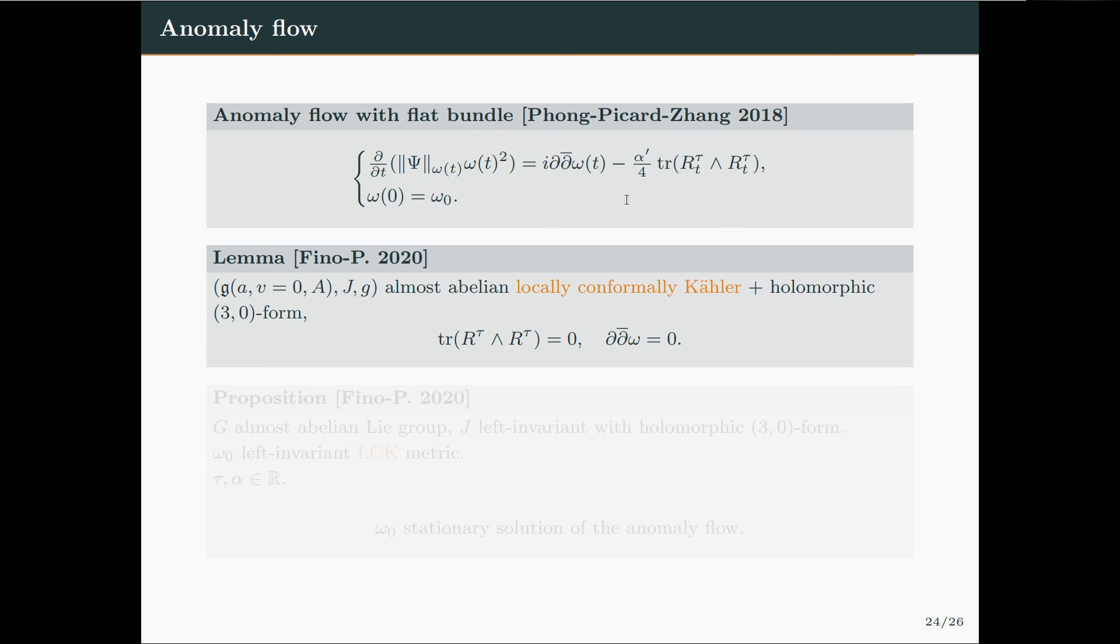Okay, so in particular we have that the Hermitian structure is Chern flat and Kahler. And so this immediately gives the following result. So if we have an almost abelian Lie group with a left-invariant complex structure admitting a holomorphic 3-0 form, and omega_0 is a left-invariant locally conformally Kahler metric, then omega_0 is a stationary solution of the anomaly flow for every choice of tau and alpha.